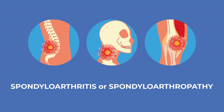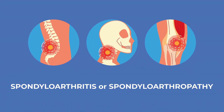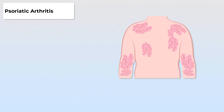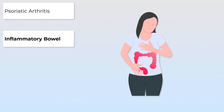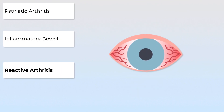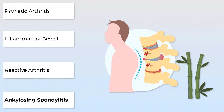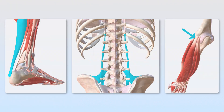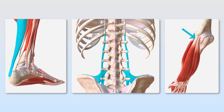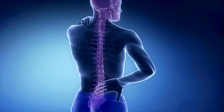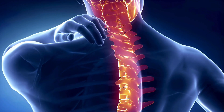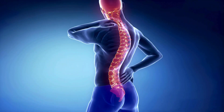Spondyloarthritis refers to a group of inflammatory arthritis conditions that fall under the broader category of arthritis. Examples include psoriatic arthritis, inflammatory bowel disease-associated arthritis, reactive arthritis, and perhaps the most commonly known ankylosing spondylitis, which we now commonly refer to as axial spondyloarthropathy. Spondyloarthritis primarily affects the synovium and the entheses — the sites where tendons, ligaments or joint capsules attach to the bone. The most common areas are the spine, the sacroiliac joints, and large peripheral joints, resulting in symptoms including pain, stiffness, and fatigue.